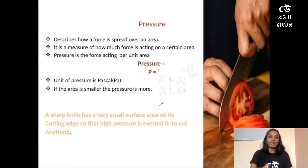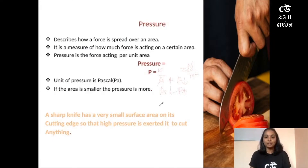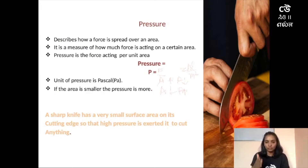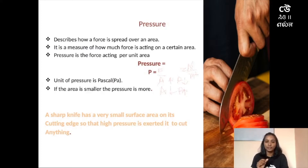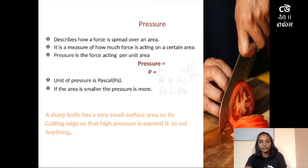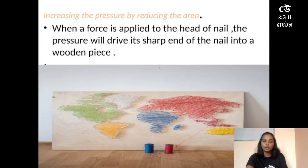Since area is inversely proportional to pressure, if the area is smaller the pressure is more. A sharp knife has a very small surface area on its cutting edge, so that high pressure is exerted by it to cut any object. I have also displayed a few slides where we can observe how pressure appears in our day-to-day life.